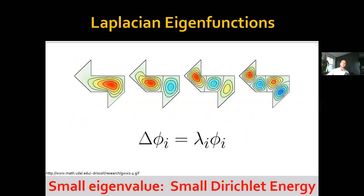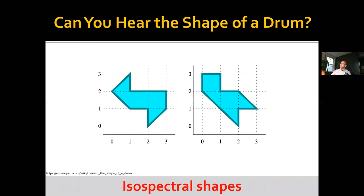Now we can ask exactly the same question: given the sequence of values λ_i, can you reconstruct a shape? A recent paper from Michael Bronstein and colleagues suggests that empirically you often can. But in theory, you cannot. Here is an example of two shapes that are isospectral — if I only remember the λ_i's and not the φ_i's or the boundary shape, I cannot distinguish between them. But these cases are rare; for the average pair of shapes, their spectra are quite different.